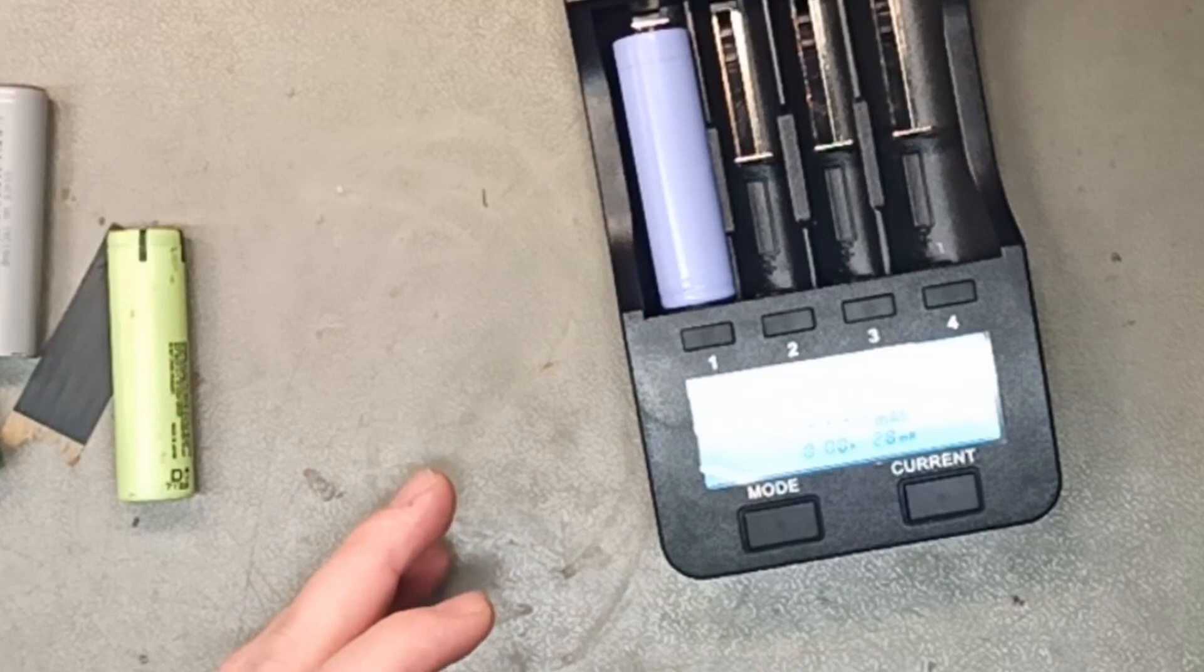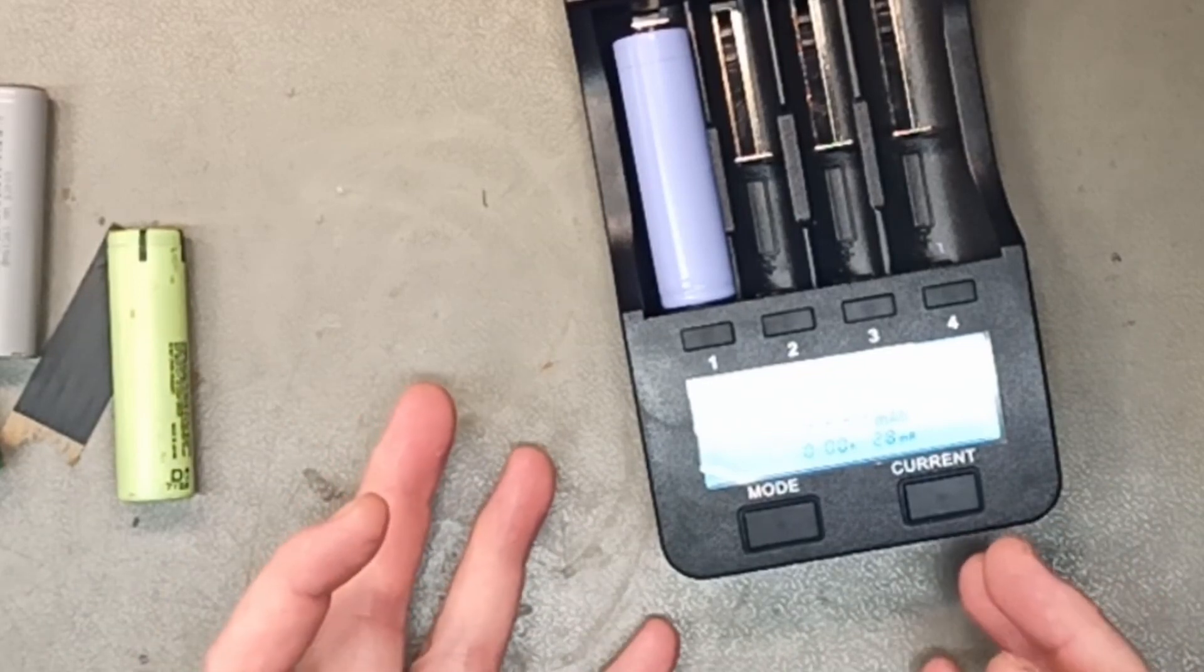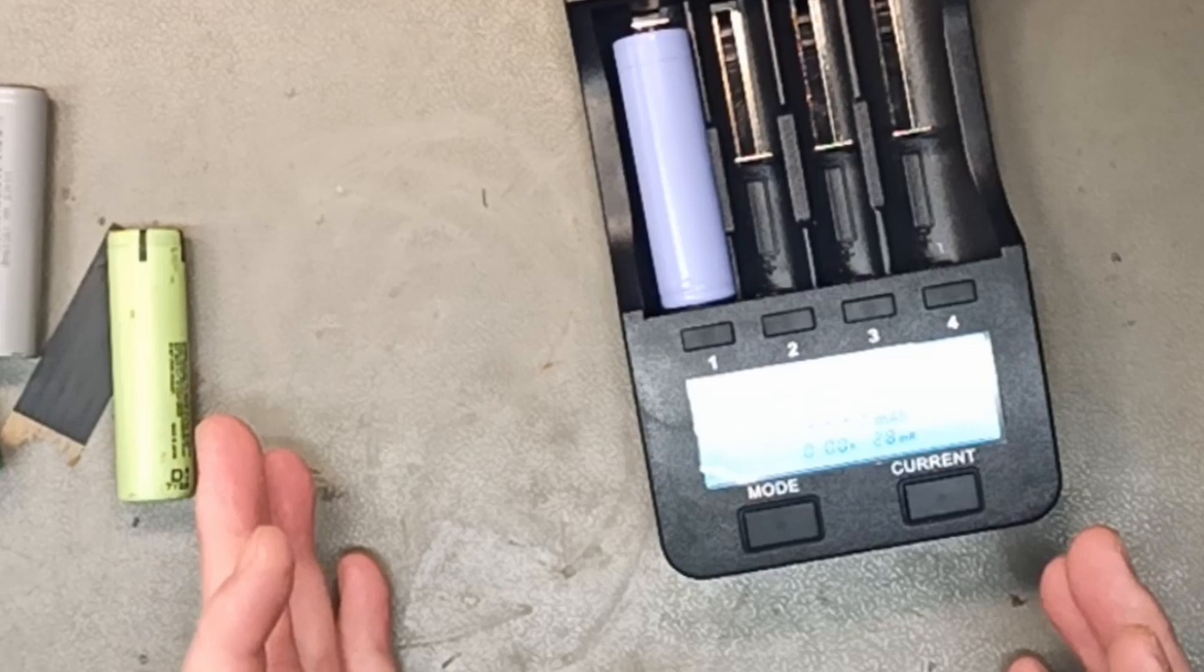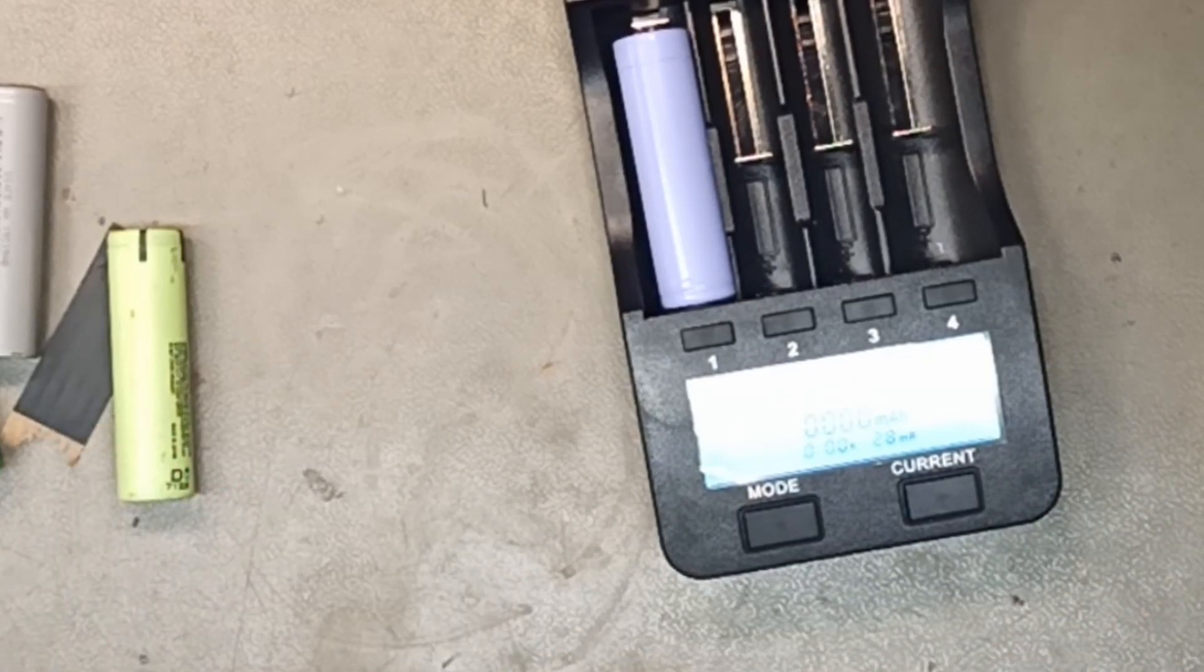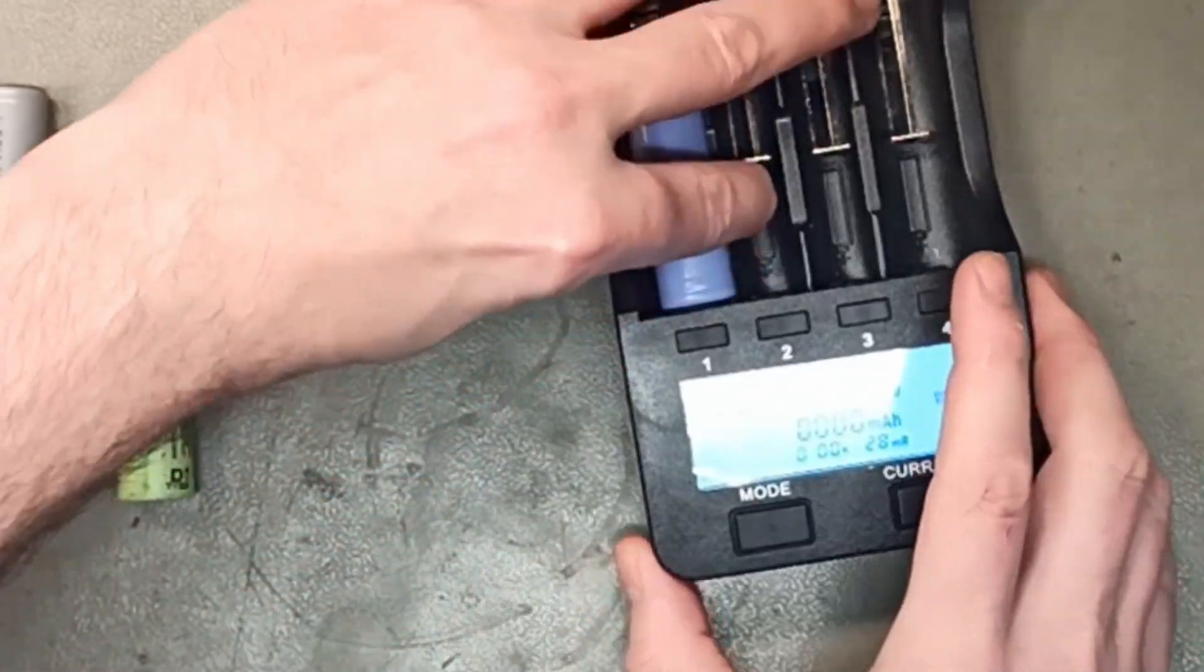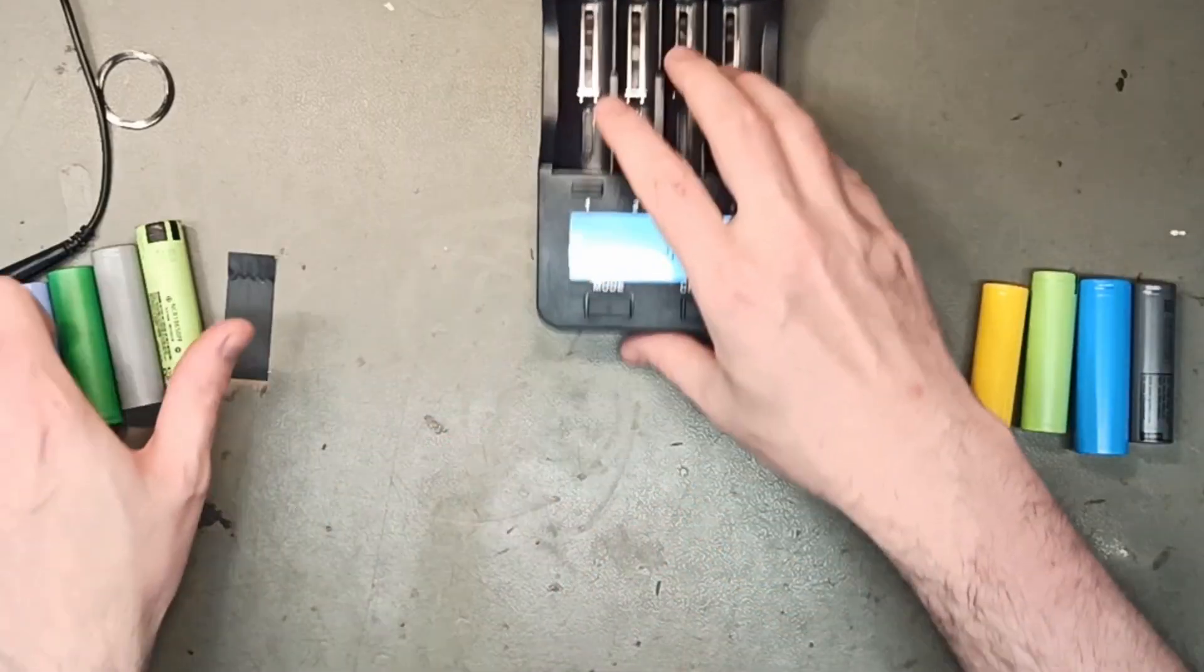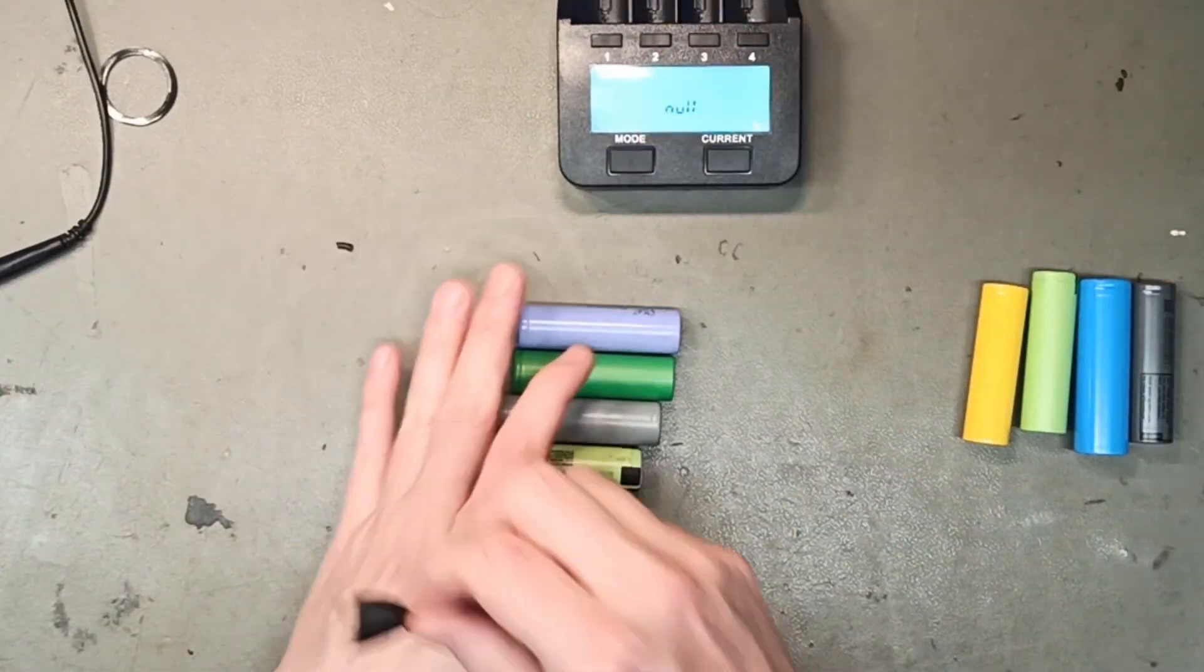Now it's 28 so the internal resistance meter on the Litokala is completely false and the same thing goes for any capacity tester. I will also test these at MC3000 from SkyRC. So let's test the actual resistance of these cells.